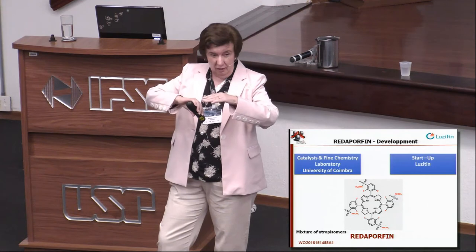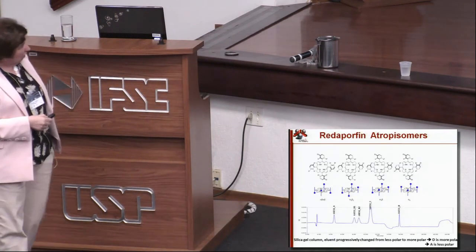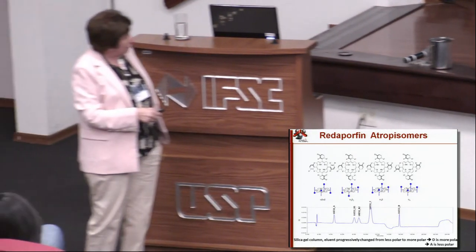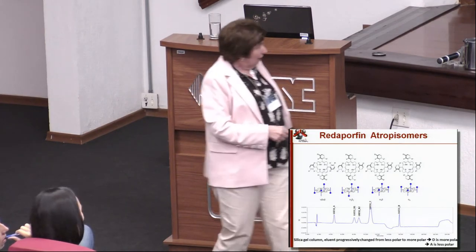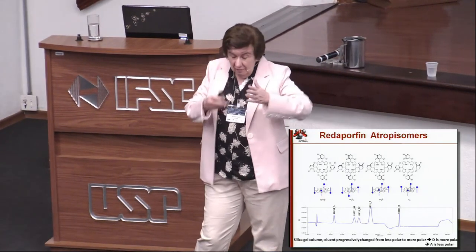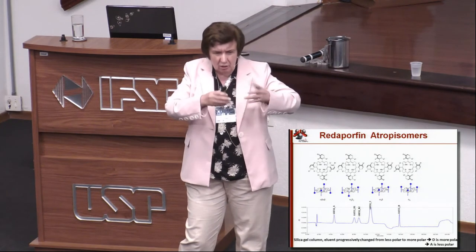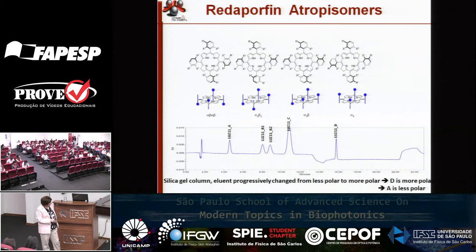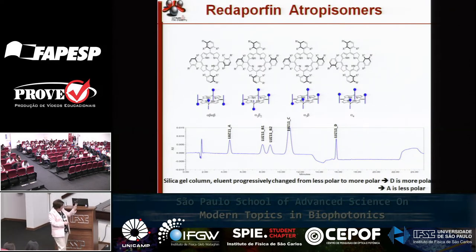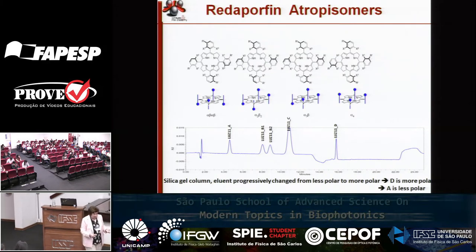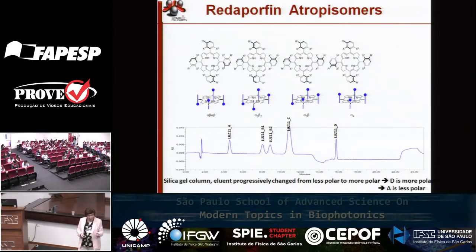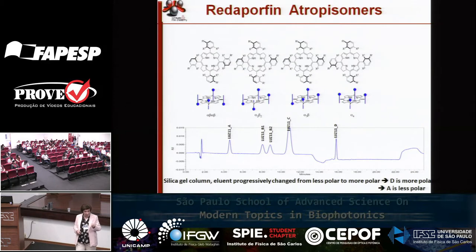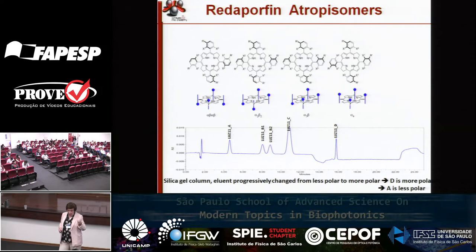So what we may have in a pure compound is a mixture of at least four what we call atropisomers — isomers that, depending on the temperature, can rotate or not, with restricted rotation around the plane of the porphyrin. We can have one group down/one up alternating, two down and two up, or all four groups on the same side. We patented this, and I think this may be another very important part for the future use of these compounds, because these molecules do not have exactly the same photodynamic effect.